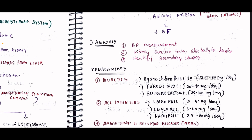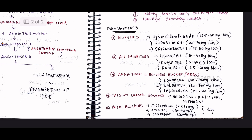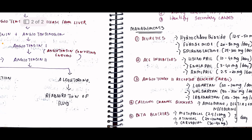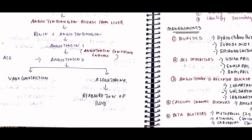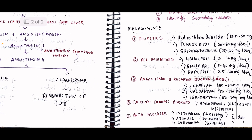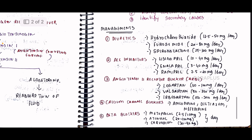For treatment, there are beta blockers. There is the ACE inhibitor — angiotensin converting enzyme inhibitor — which blocks vasoconstriction, angiotensin 2, and aldosterone formation. Diuretics work by stopping fluid reabsorption. There are also calcium channel blockers and beta blockers. I suggest checking these drug classes and learning their names properly.